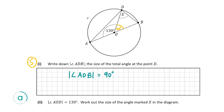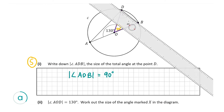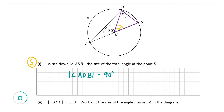Now to work out angle x, I'm going to mark in another triangle — this time triangle ODB. We're going to use a different rule this time. One thing we can say is that the distance from the centre of a circle to any point on the circle equals the radius. So the distance from O to B and from O to D are both equal to the radius, which means triangle ODB is an isosceles triangle.